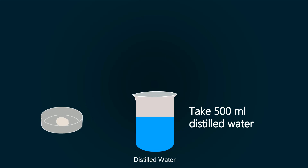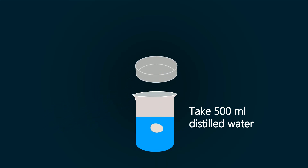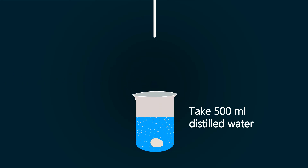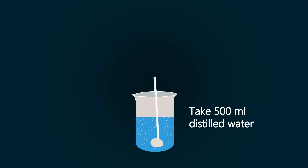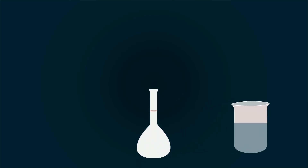Take some distilled water in a beaker up to 500 milliliters and put the Mohr's salt into it. To make a homogeneous mixture, stir it well, then pour the solution into the volumetric flask with the help of a funnel.